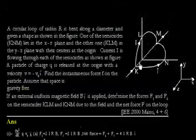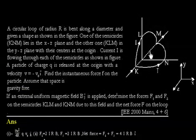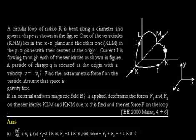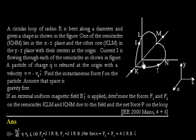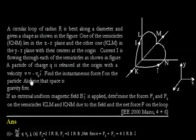The question says one part is KLM and another part is KNM. The KLM loop lies in the YZ plane and KNM lies in the XZ plane — so half of the loop is in the XZ plane and half in the YZ plane. A charged particle of charge Q is kept at the origin and thrown with velocity -V₀î. We need to find the force on this particle. Assume the space is gravity free.